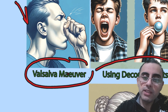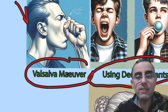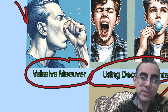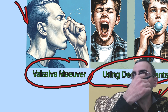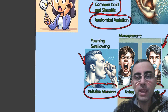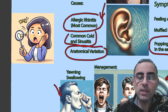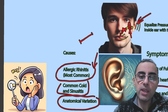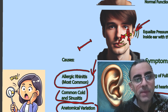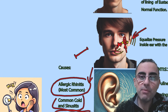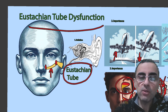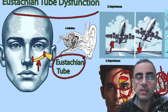Decongestants are also effective, especially when the problem is caused by infections, allergy, common cold, or sinusitis. Antibiotics are indicated if there is a bacterial infection. Also, when we have inflammation of the Eustachian tube, we often have ear pain as well — that's why a person with a common cold may also have ear pain, as these conditions are very tightly correlated.